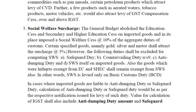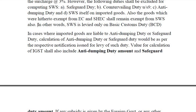However, the following duties shall be excluded for computing SWS: safeguard duty, countervailing duty under Section 9, anti-dumping duty, and SWS itself on imported goods. Also, the goods which were hitherto exempt from education cess and secondary and higher education cess shall remain exempt from SWS also. In other words, SWS is levied only on basic customs duty. Value for calculation of IGST shall also include anti-dumping duty and safeguard duty.